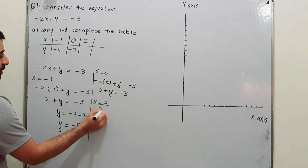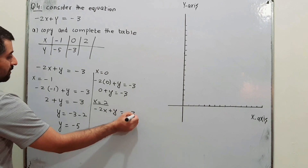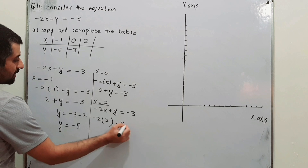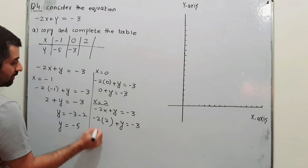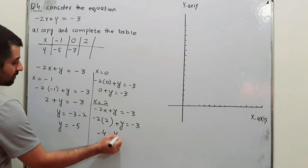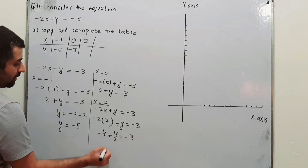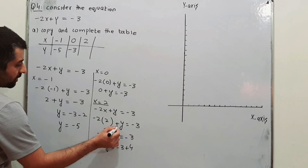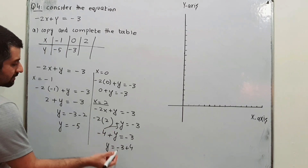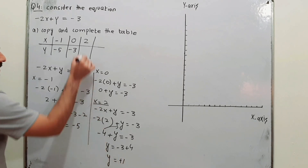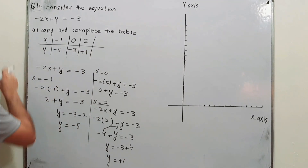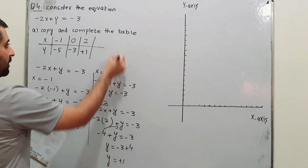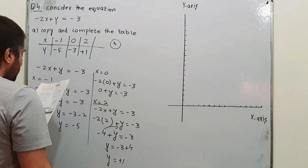Similarly, when x is 2: minus 2 into 2 plus y = minus 3 gives minus 4 plus y = minus 3, so y = minus 3 plus 4, which equals plus 1. This completes the table and is the solution for Part A.